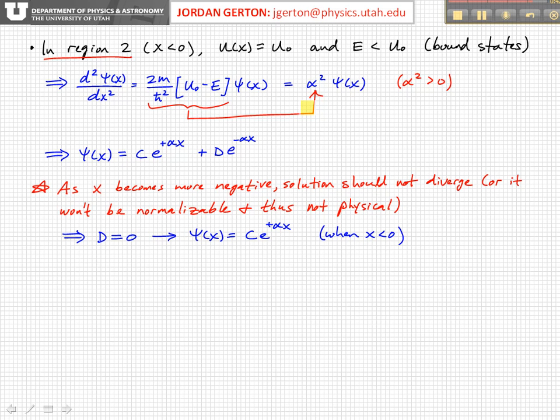This basically means that we would have no way of knowing where the particle is, that it's not necessarily anywhere. And so that's not physical. We require that the wave function is normalizable, and so we basically can't have a solution that keeps getting bigger as we go to larger and larger values of negative X.